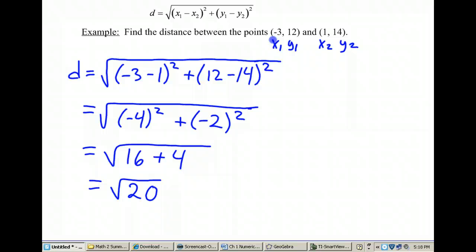That doesn't look like 4.47 yet, but let's try to simplify this quantity. And depending on your teacher, they may accept it as the square root of 20, they may ask you to go to the calculator, or they also might say, can you simplify this radical as much as possible? So the distance of the square root of 20, let me just show you how to simplify this radical. 20 is the same thing as 4 times 5.